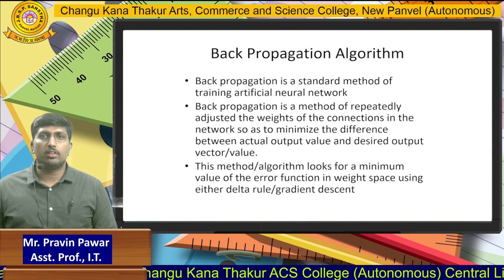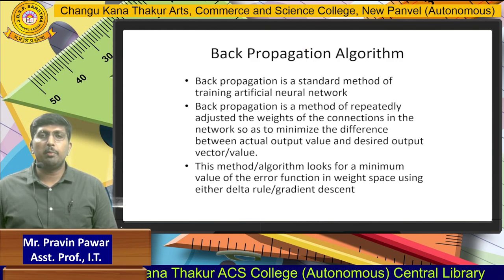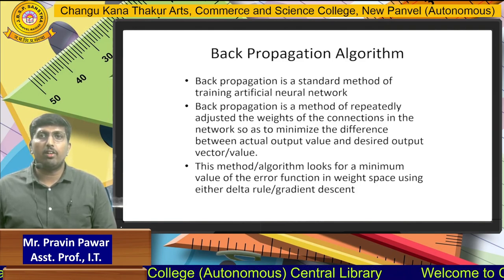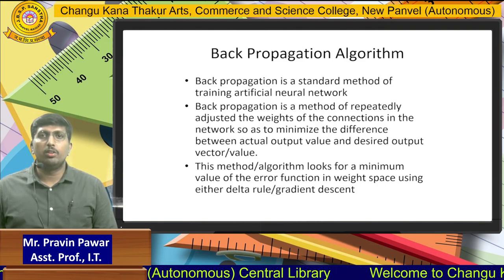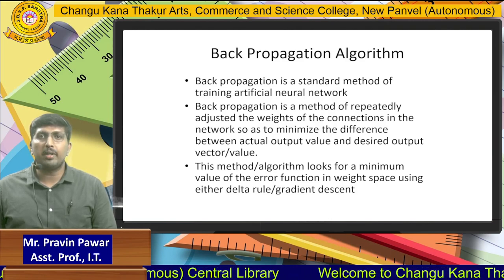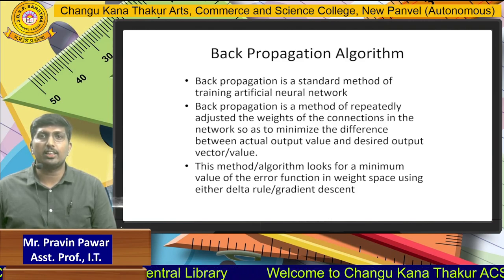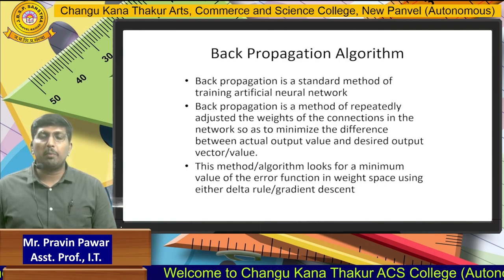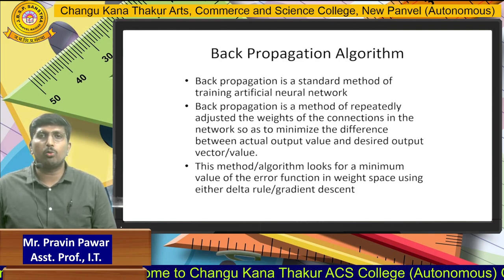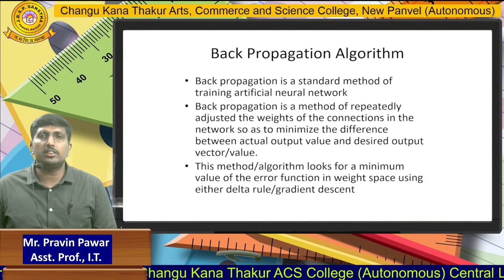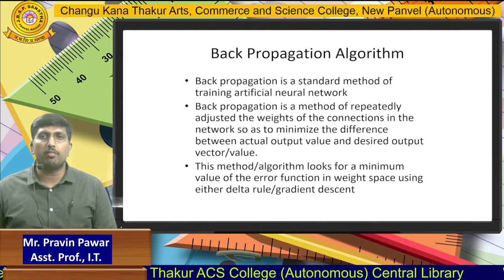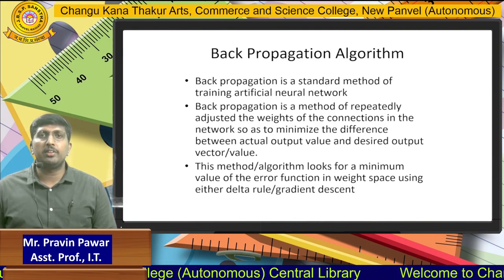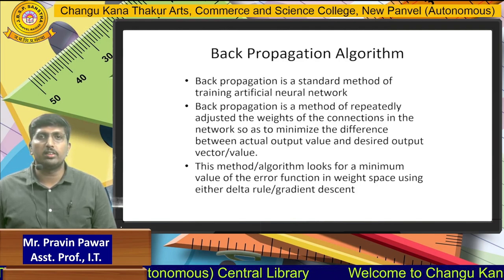The backpropagation algorithm is the method of rapidly adjusting the weights of the connections in the network so as to minimize the difference between the actual output and the desired output. Backpropagation is specifically a process to generate the difference between what output we required and what the actual output is, found with the help of the backpropagation algorithm.